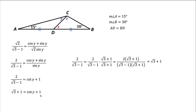We cancel 1 from both sides to get cotangent(Y) equals square root of 3. If you're not comfortable with cotangent, recall that tangent is 1 over cotangent, so tangent(Y) equals 1 over square root of 3. From the analysis of the 30-60-90 degree triangle, we know that tangent of 30 degrees equals 1 over square root of 3. So Y equals 30 degrees.